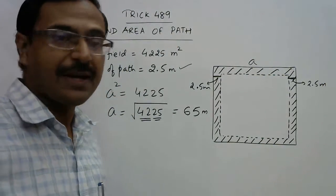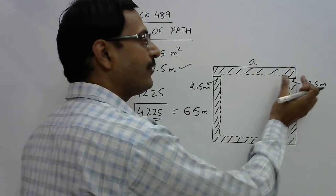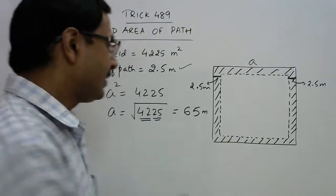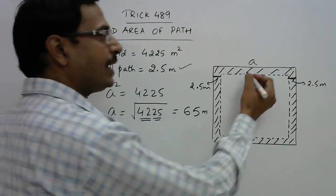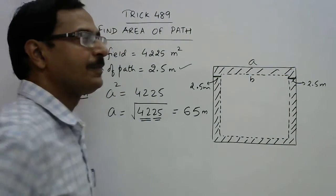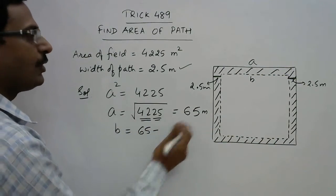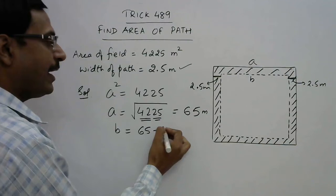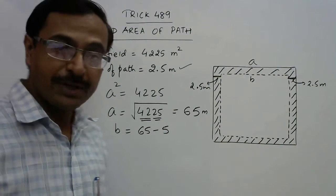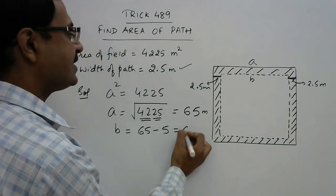On both sides we have 2.5 and 2.5 which is included in 65. The inner edge, that is b, will be obtained by subtracting 2.5 plus 2.5, which is 5, from the outer edge. So the inner edge is 60.